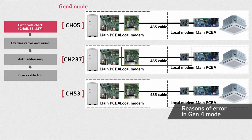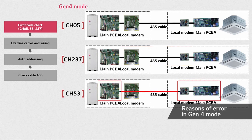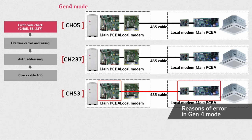CH237 indicates an error between the indoor unit's local modem and the outdoor unit's local modem. On the other hand, CH53 occurs when the outdoor unit's main PCB does not get any signal from the indoor unit.